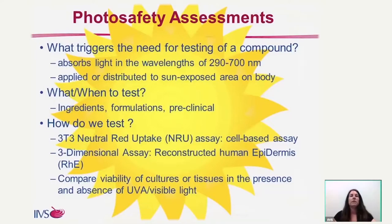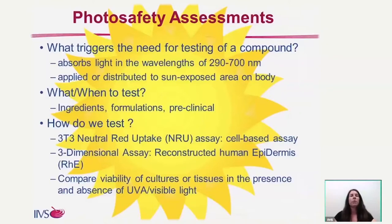When it comes to photosafety assessments, there are a couple of triggers for why we want to test a compound. Some of those are that they absorb wavelengths of 290 to 700 nanometers, or if you apply it or it's distributed to sun-exposed areas on your body. Many compounds that are ingredients that will become part of a final formulation are those that we might want to test. Typically, we would use these in vitro assay assessments as part of a preclinical testing approach — before we put them into humans or on humans, we want to make sure that there is no adverse reaction or phototoxicity potential.